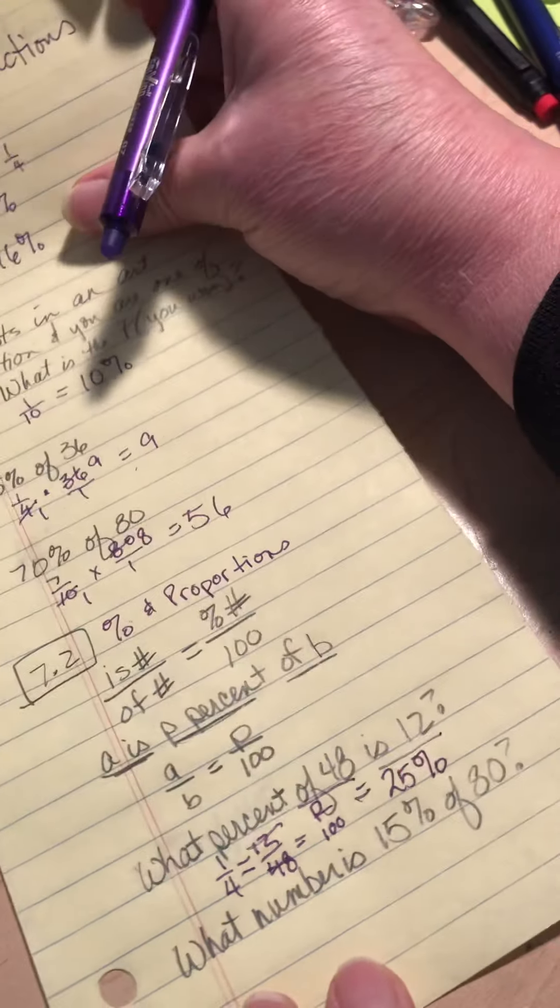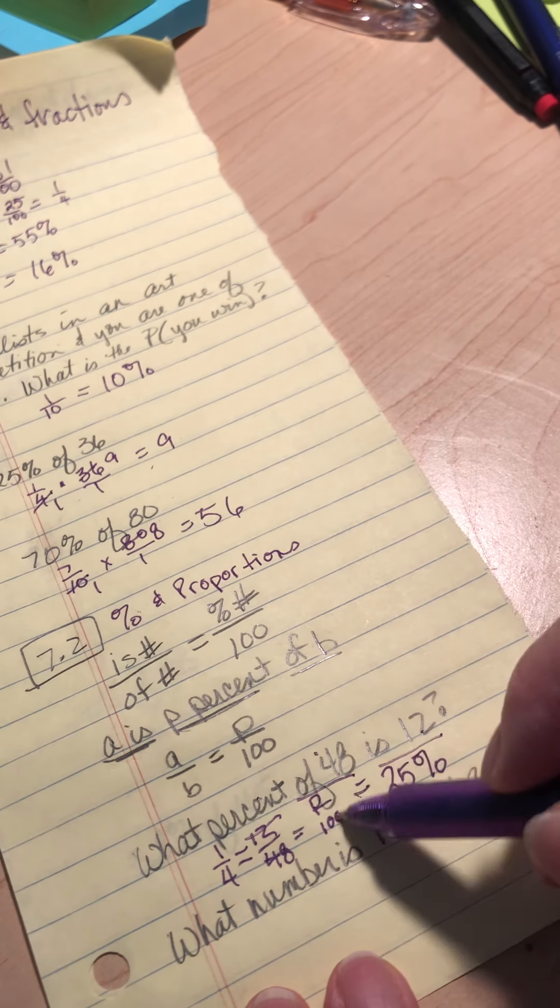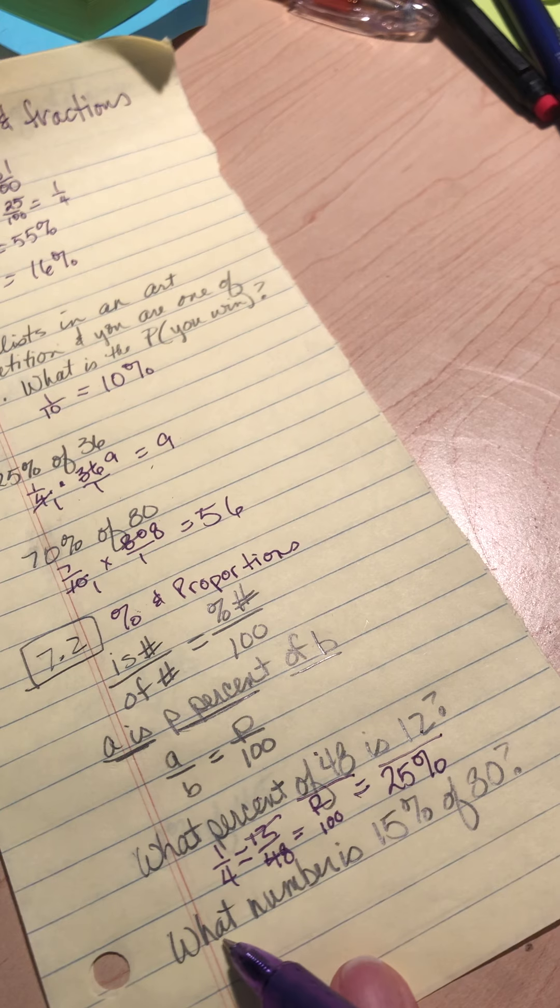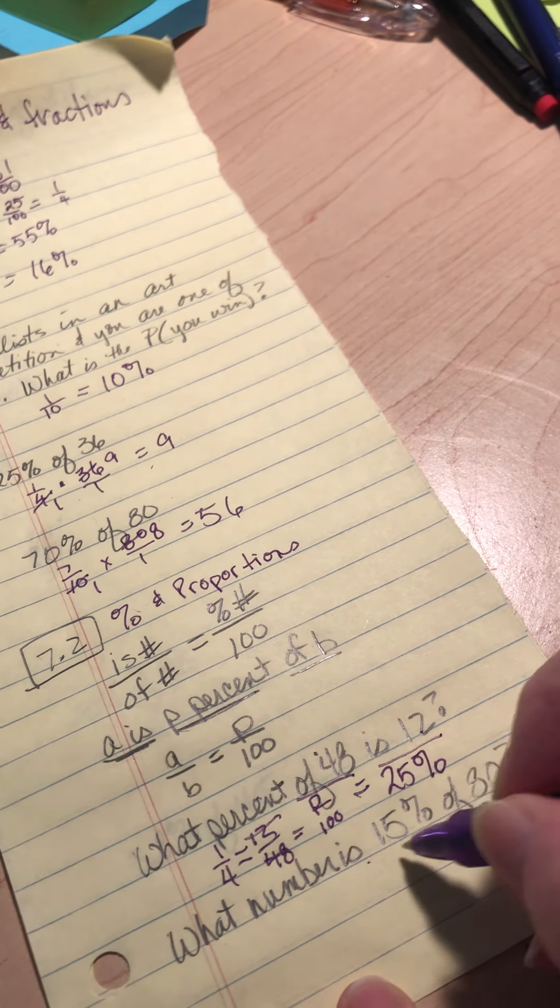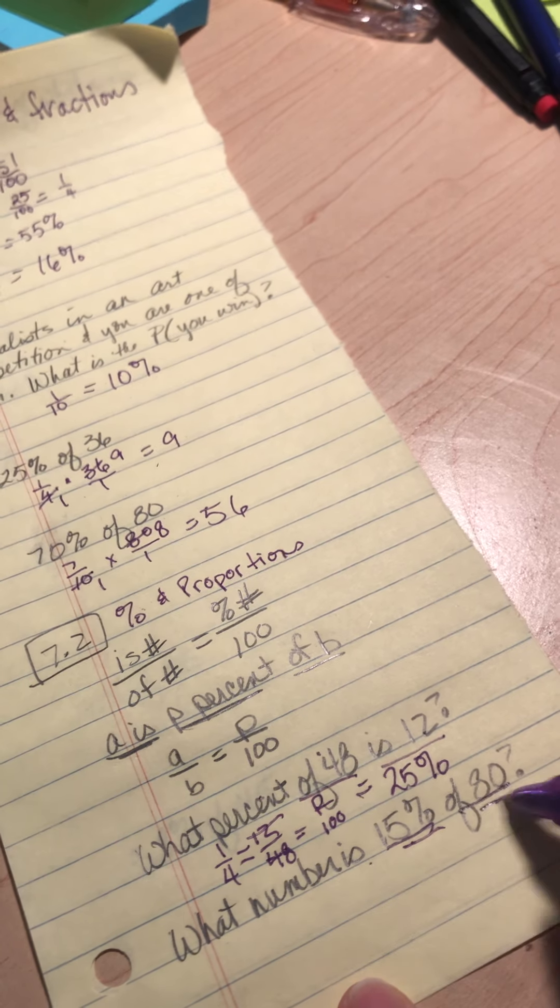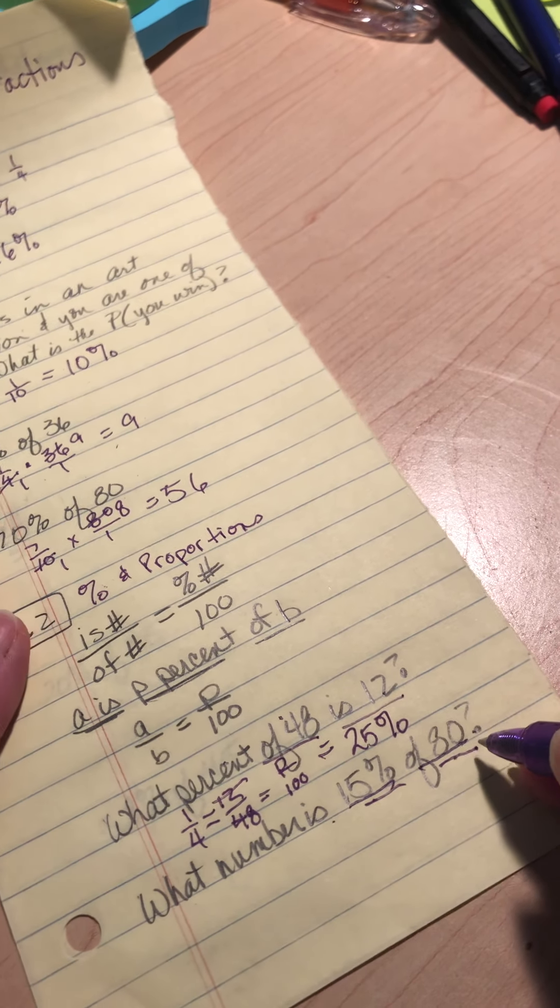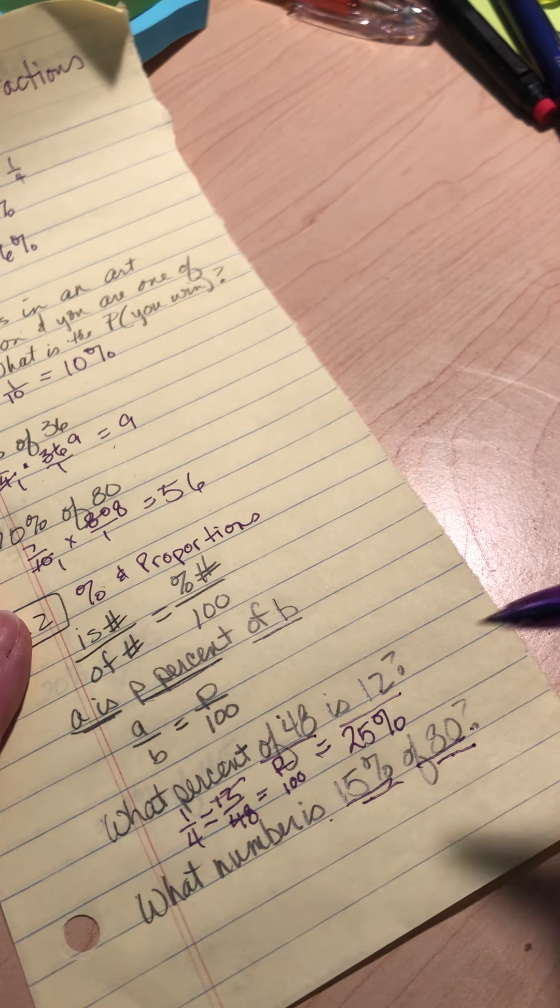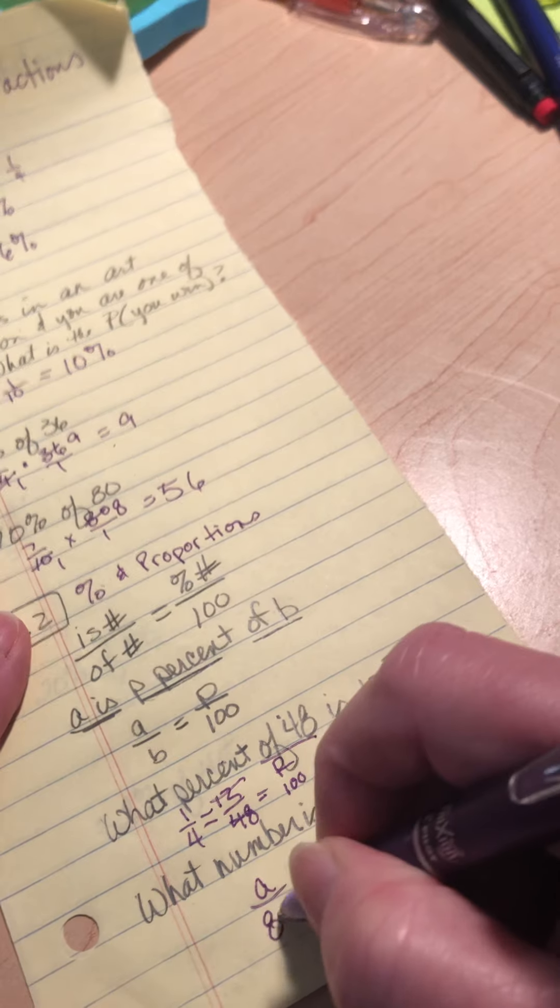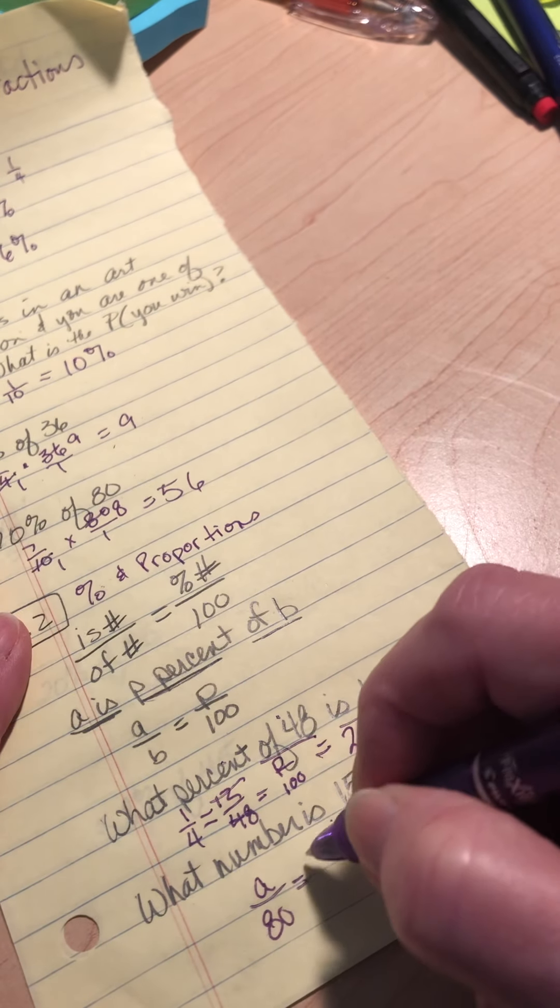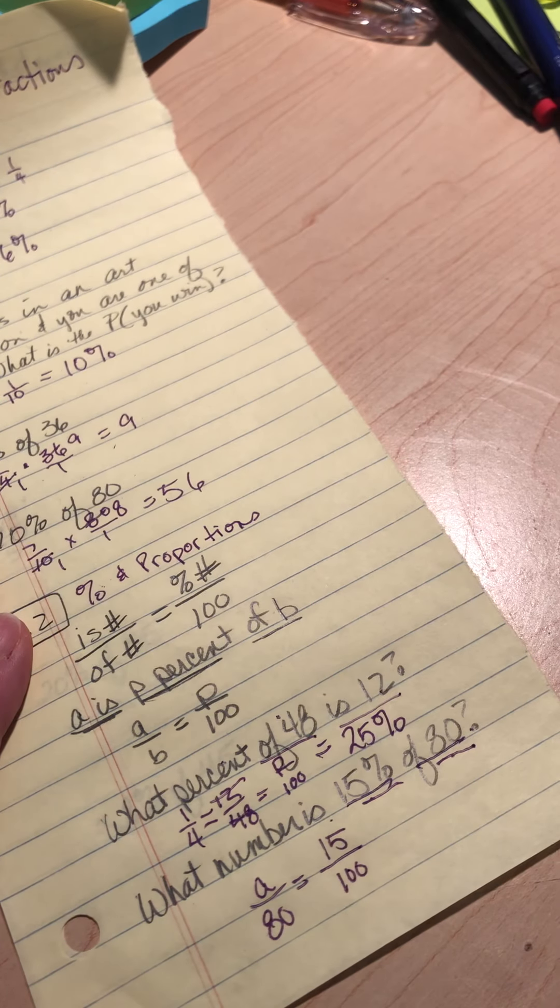Does that make sense? I hope so. Is number over of number equals P over 100. So if I have what number is 15% of 80, well, I've got my percent number and I've got my of number. So that translates into A over 80 equals 15 over 100.